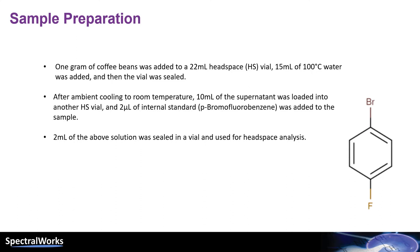Sample prep was a simple headspace preparation starting with 1 gram of coffee added to 50 mL of boiling water. After it cooled to room temperature, 10 mL of the supernatant was spiked with 2 µL of the internal standard para-bromofluorobenzene. Finally, we took 2 mL of the solution and sealed it in a vial for analysis.